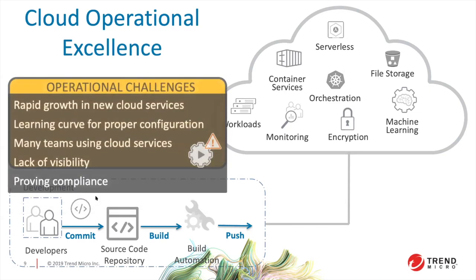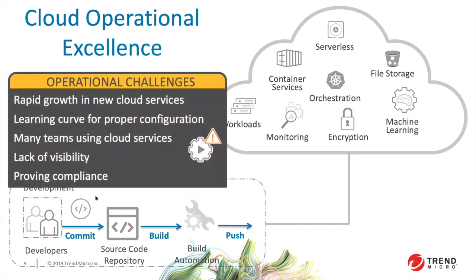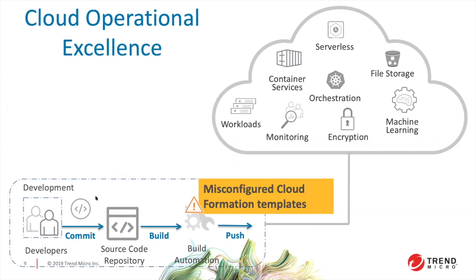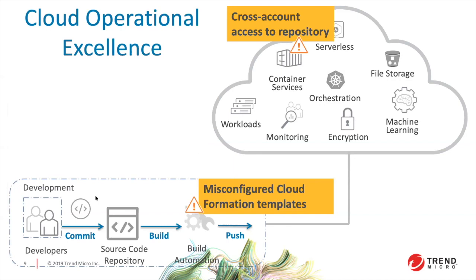What ends up happening is limited visibility because teams are operating in different places across the enterprise. You've got inexpertise with various teams. When issues are introduced early on — say with infrastructure as code, a template downloaded from GitHub or Stack Overflow — you've got problems at the very genesis of your application that compound once you launch.